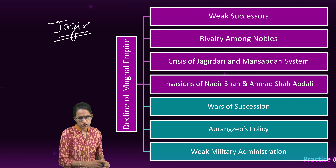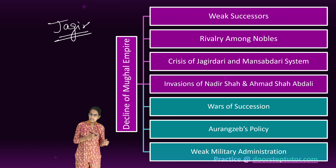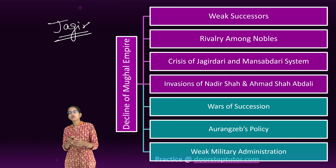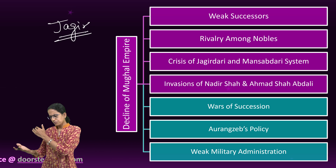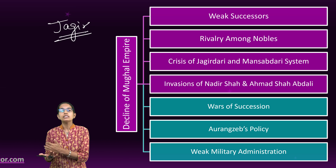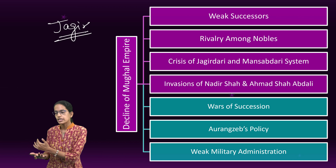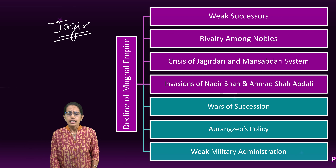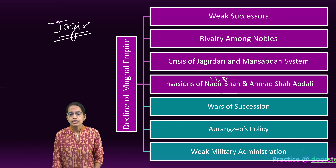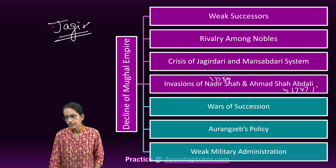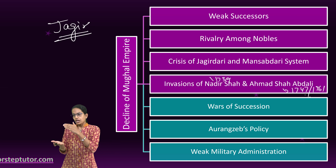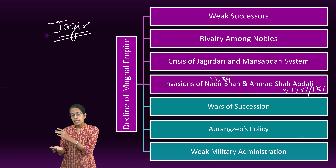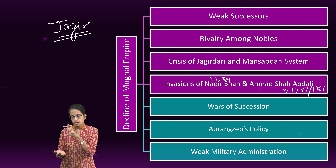Besides this, there were numerous invasions. The important ones were by Nadir Shah from Iran, who took away the Kohinoor and the Peacock Throne, and then Ahmed Shah Abdali. Ahmed Shah Abdali and the Marathas fought at the Third Battle of Panipat. Nadir Shah invaded India in 1739. Ahmed Shah came twice — in 1747 and 1761 — and actually defeated the Marathas in the Third Battle of Panipat.